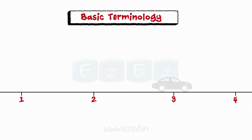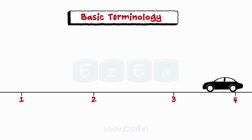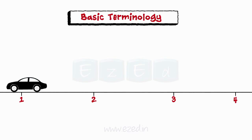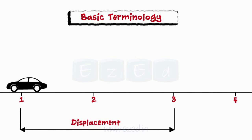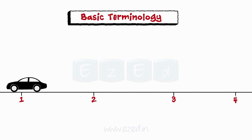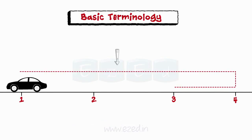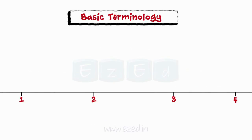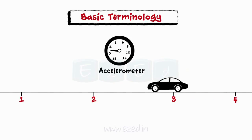Displacement is the change in position of a particle. If a car starts its journey from point 3, moves to point 4 and then moves to point 1, then the total displacement is from point 3 to point 1 — it has no relation with the actual distance travelled. Distance is the total distance travelled by the car. Velocity is how fast a car can move, and acceleration is the change in velocity with respect to time.